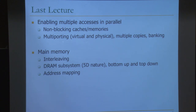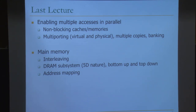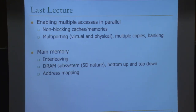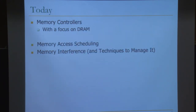Last lecture, we covered enabling multiple accesses in parallel — different ways of doing it. We talked about non-blocking caches and how to do multiple accesses in parallel in the same cycle or in consecutive cycles: multi-porting, multiple copies, and banking. We started main memory and covered most of it — interleaving, which is the same as banking, and the DRAM subsystem, which is hierarchical in nature both from bottom-up and top-down. We also talked about address mapping.